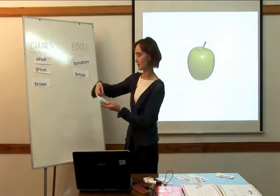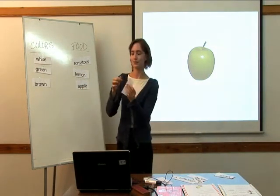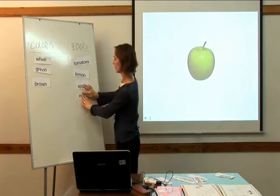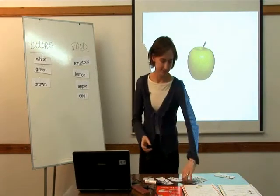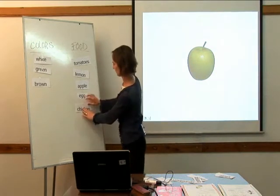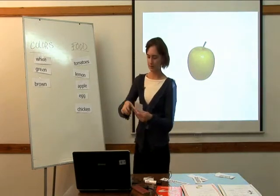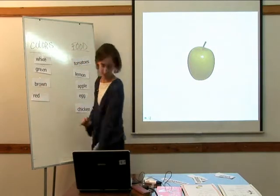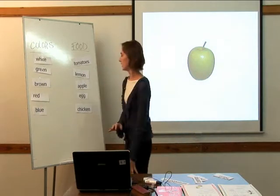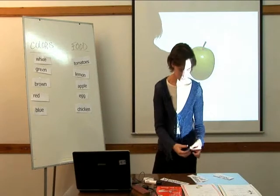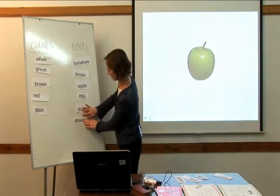How about the word apple? Apple is a food. And an egg — we can say this is a food; an egg you use to make pancakes. Chicken is a food, so it's going to go here. And how about some more colors? The color red and the color blue. How about strawberry? Strawberries are a food.